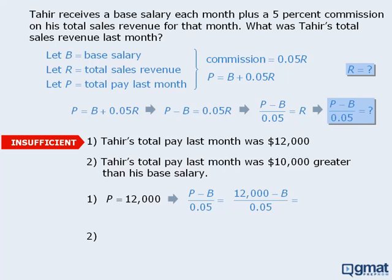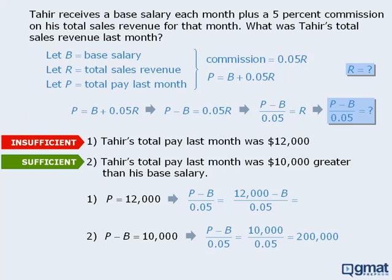On to statement 2. Here we are told that Tahir's total pay last month was $10,000 greater than his base salary — in other words, P minus B equals $10,000. Does this provide enough information? Yes — if we replace P minus B with 10,000, we can evaluate the fraction to be 200,000. So statement 2 is sufficient, which means our answer is B.